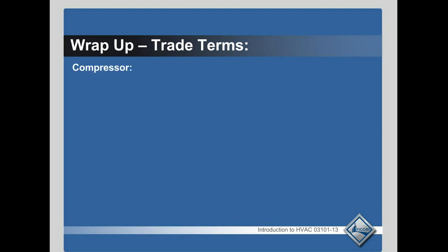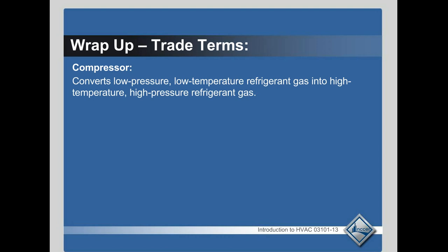So the compressor — that is the part of the refrigeration system that converts that low pressure, low temperature vapor into high temperature, high pressure refrigerant gas. It is pretty much the heart of the refrigeration cycle that pumps the refrigerant around. It is also the dividing point between the low pressure system and the high pressure system — one of the dividing points.